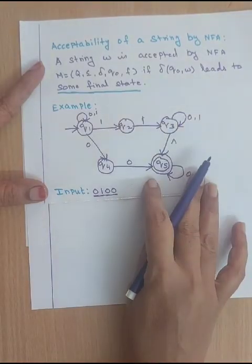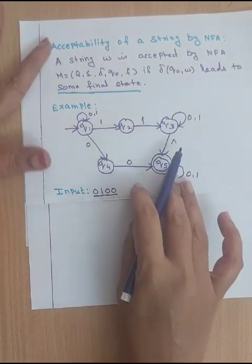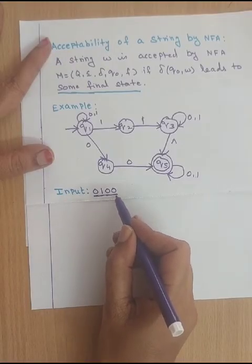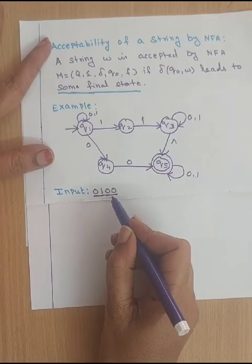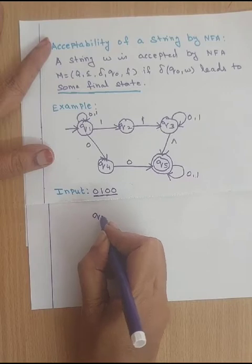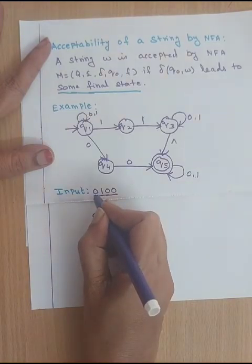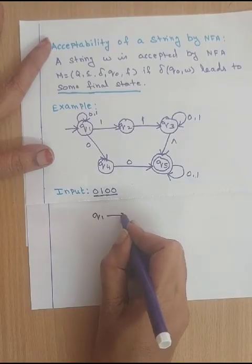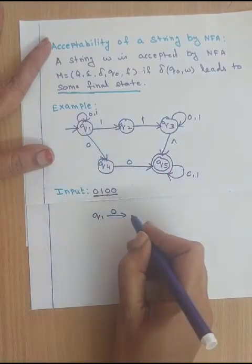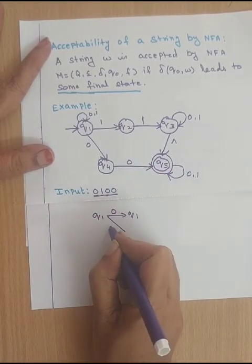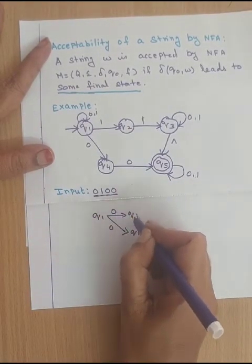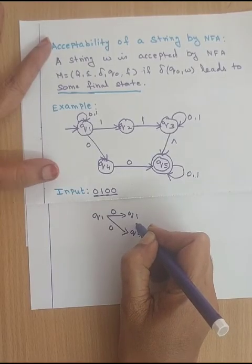Let us discuss this with an example. Here we have 5 states, Q1 to Q5, with the input 0 and 1. The input given is 0100. Let us check whether this string is acceptable or not. Start with the initial state Q1. The first digit of the input string is 0. Q1 on 0 goes to itself and also to Q4. So for the input 0, we can have 2 states: Q1 and Q4.